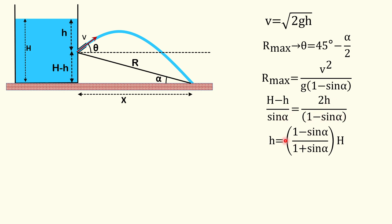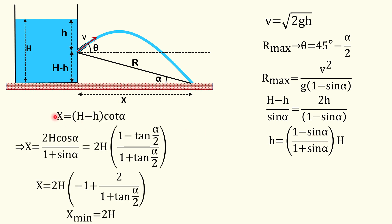So R_max here equals (H − h)/sin α, and setting that equal to v²/[g(1 − sin α)] = 2gh/[g(1 − sin α)] = 2h/(1 − sin α), we can solve for small h in terms of alpha and H. Now we can determine x in terms of only one variable alpha, since x = (H − h)·cot α in the right-angle triangle. Simplifying, x comes out to be 2H·cos α / (1 + sin α).